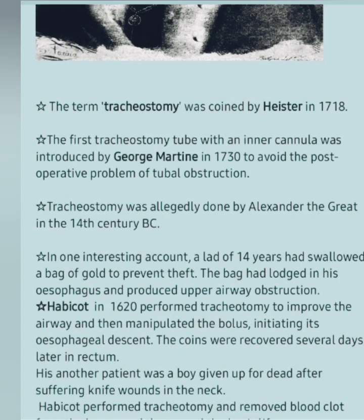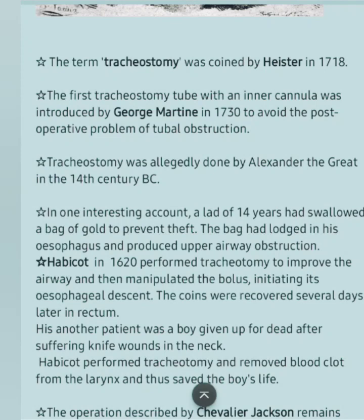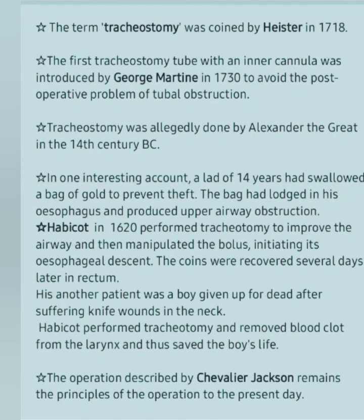The first tracheostomy tube with an inner cannula was introduced by George Martin in 1730 to avoid the postoperative problem of tubal obstruction. Tracheostomy was allegedly done by Alexander the Great in the 14th century BC. Interestingly, a lad of 14 years had swallowed a bag of gold to prevent theft, and the bag had lodged in his esophagus and produced upper airway obstruction. Habicot in 1620 performed tracheostomy to improve the airway and then manipulated the bolus, initiating its esophageal descent, and the coins were recovered several days later in the rectum.